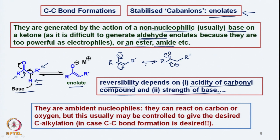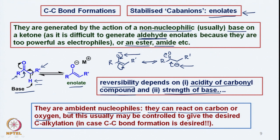Because the enolate exists as a resonance structure, we have a possibility of either the oxygen or the carbon being a nucleophile. So these enolates are ambident nucleophiles — they can react either on carbon or on oxygen, but this can be controlled to give C-C bond formation if desired.